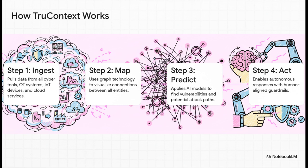Then, for step three, it uses that incredible map to predict all the different paths an attacker could take. And finally, step four, it can actually take action to shut those paths down. But, and this is key, with human-aligned guardrails. All that means is a person is always in the driver's seat setting the rules of engagement.